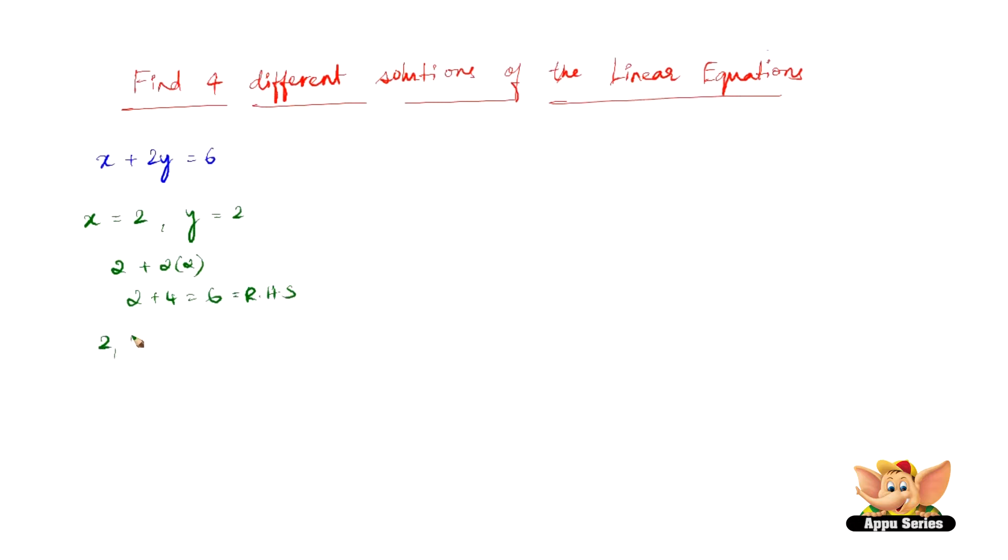So we can say that 2, 2 is one of the first solutions for the equation x plus 2y equals 6. So this is the first one.